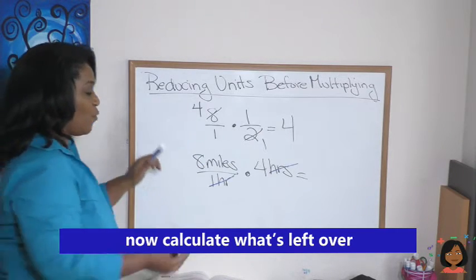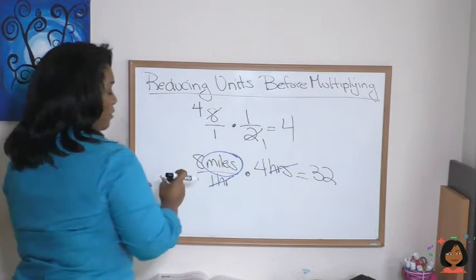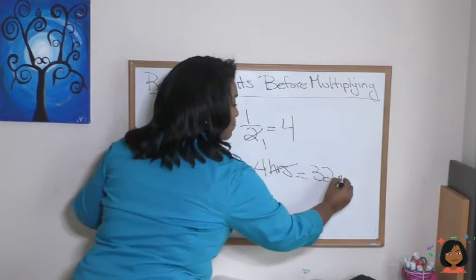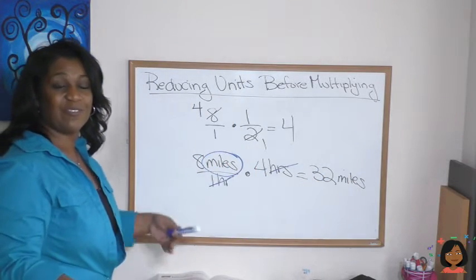So 8 times 4 is 32, and what's my label that's left? My label is miles. So which means if I walked for 4 hours, I would have traveled 32 miles.